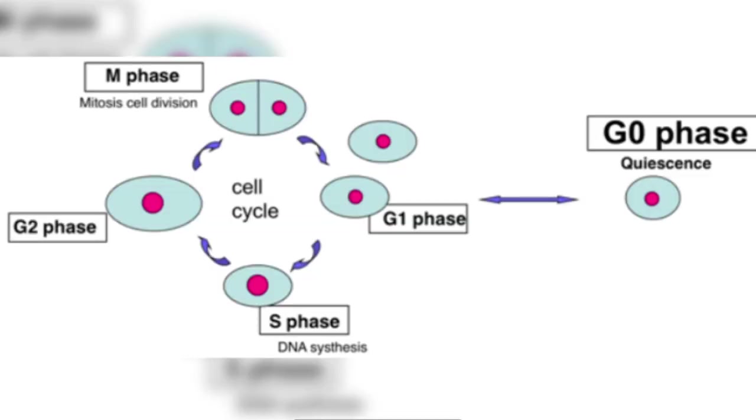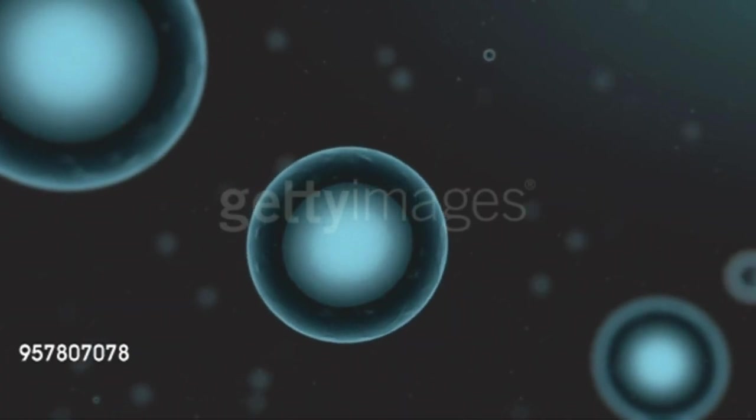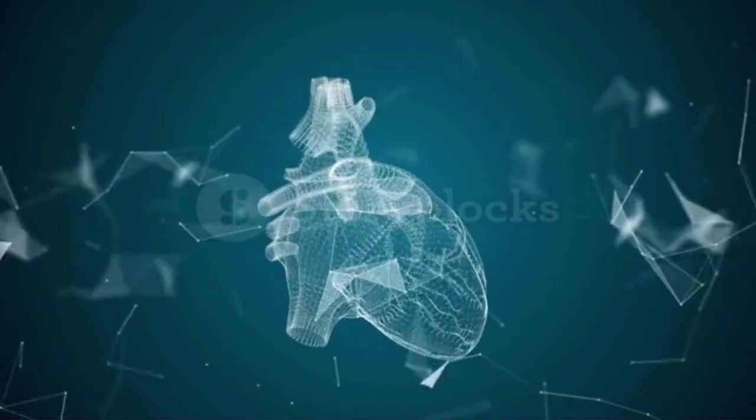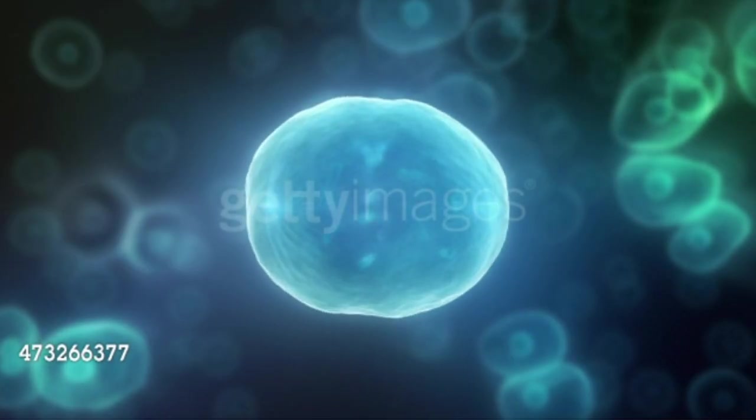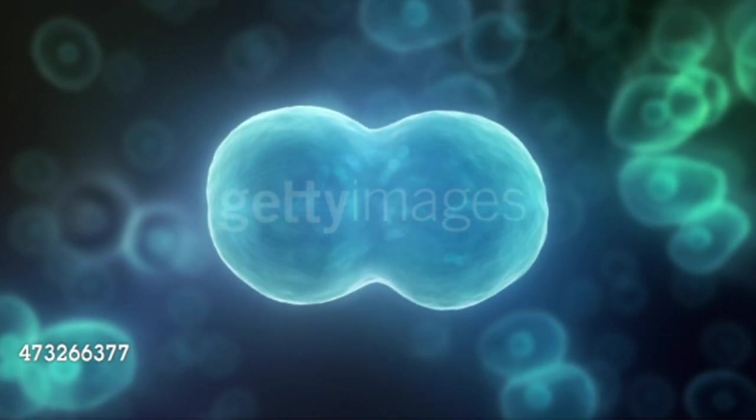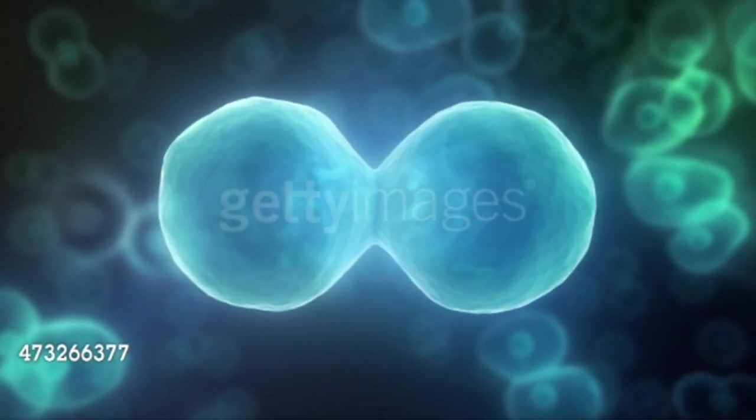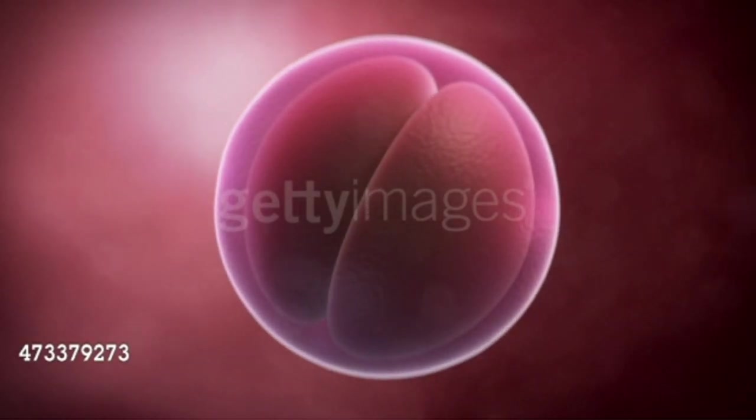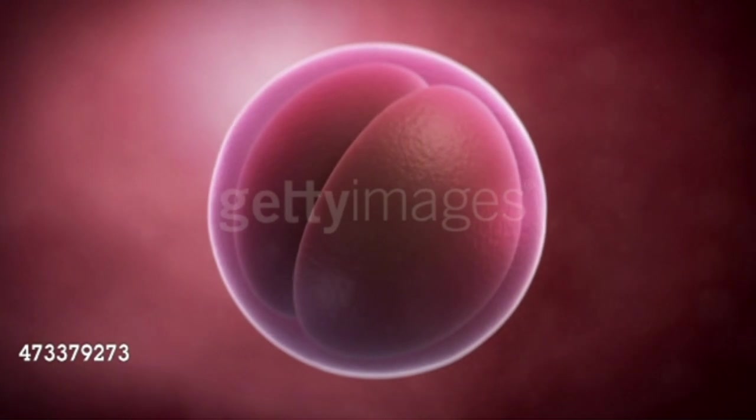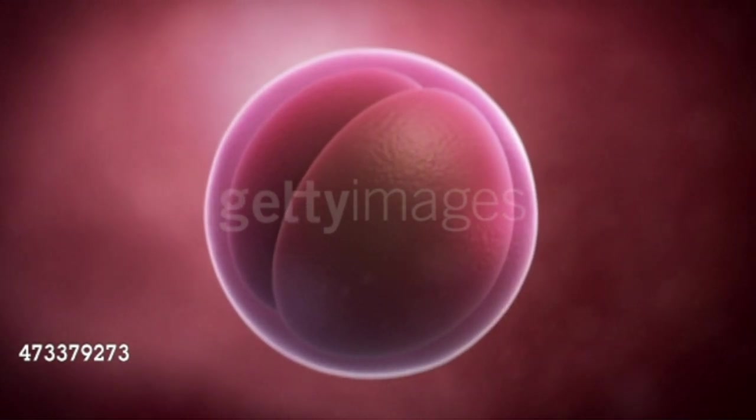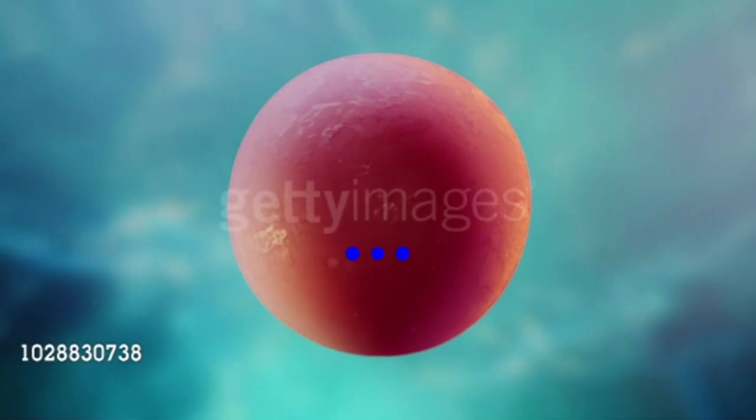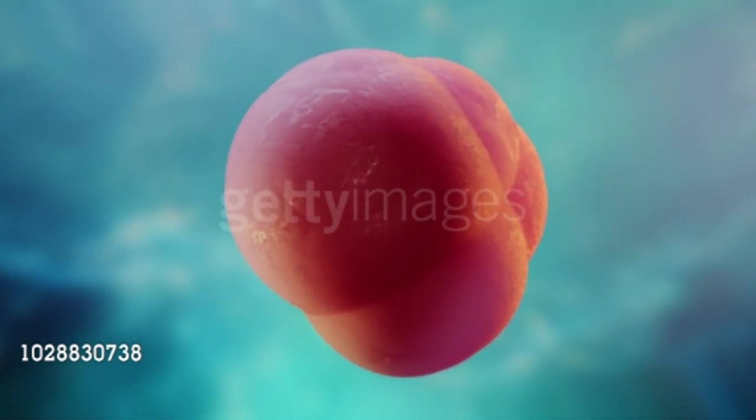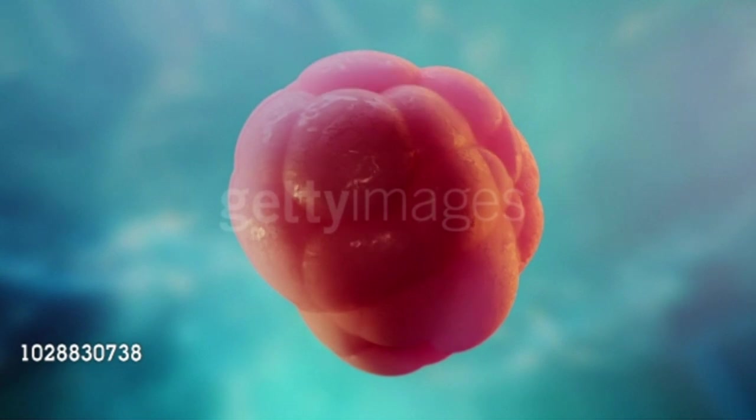G0 phase. Some cells in adult animals do not appear to exhibit division, for example heart cells. Many other cells divide only occasionally, as needed to replace cells that have been lost because of injury or cell death. These cells that do not divide further exit G1 phase to enter an inactive stage called the quiescent stage, G0, of cell cycle. Cells in this stage remain metabolically active but no longer divide or proliferate unless required.